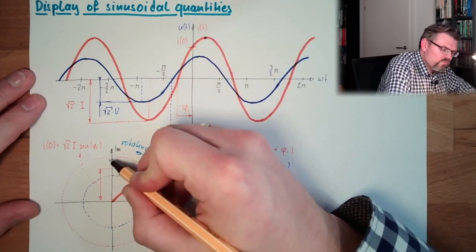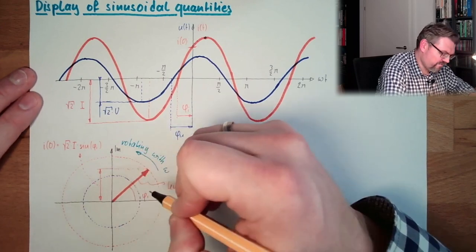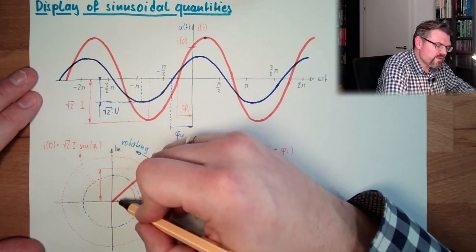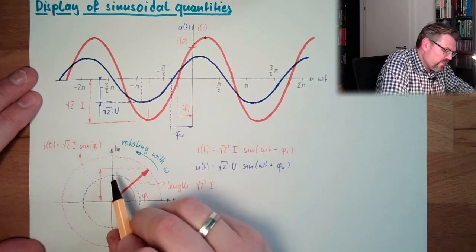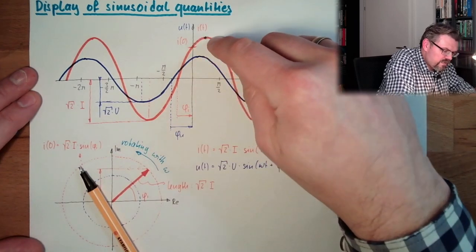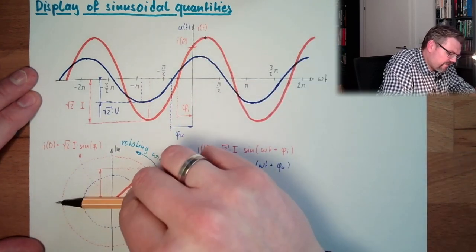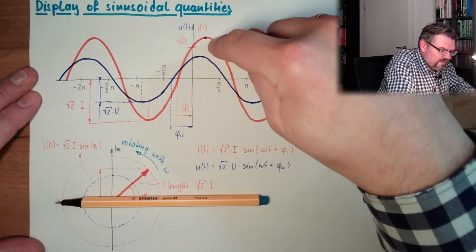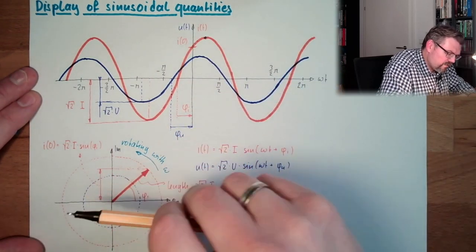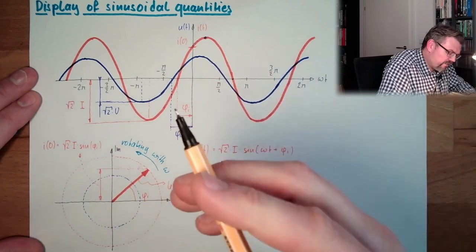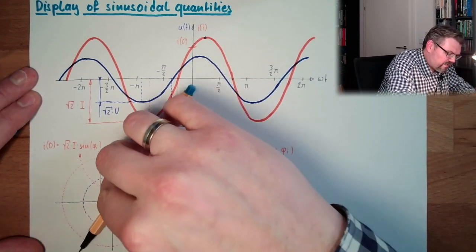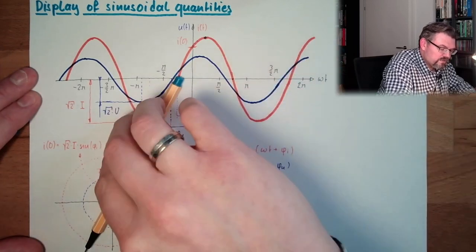Here we have the full length of the arrow projected to the imaginary axis. And then we move further. And this will get smaller. This is here, this area. Then we are at this point. And we have no projection at all. It's zero. We are here. We are suddenly here. And then the projection is going to the negative side.